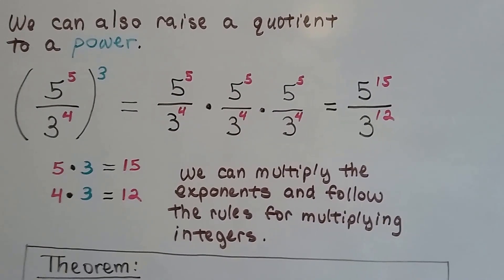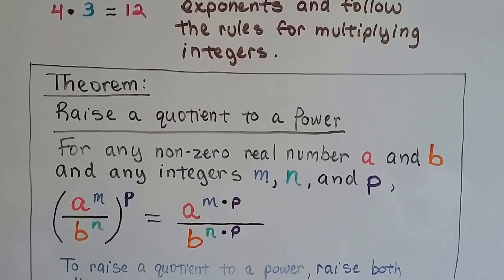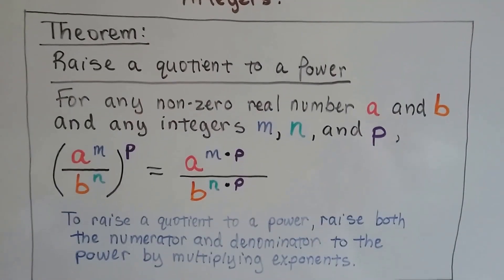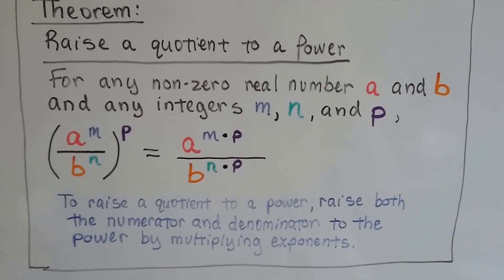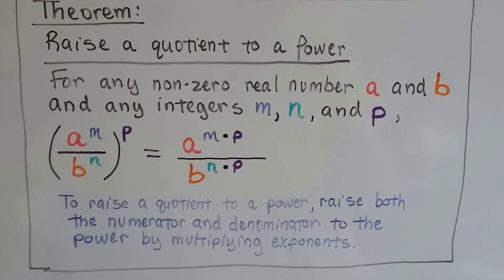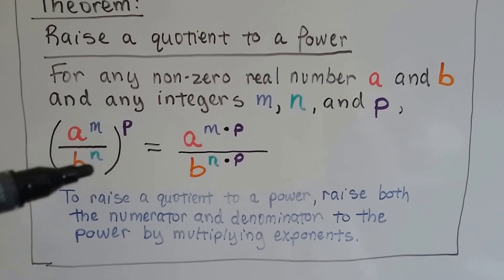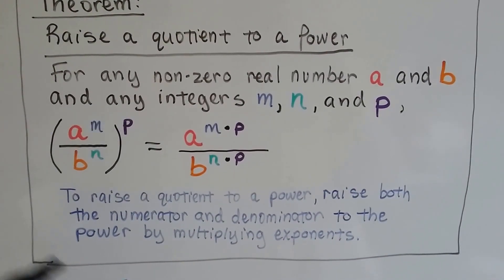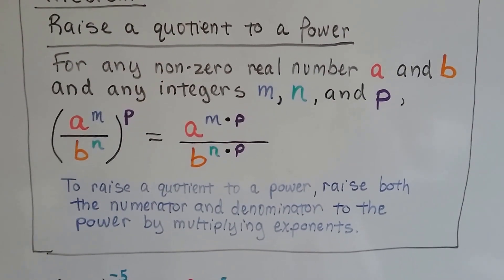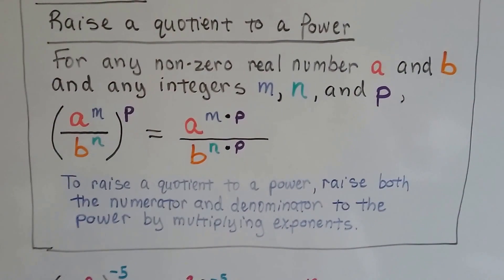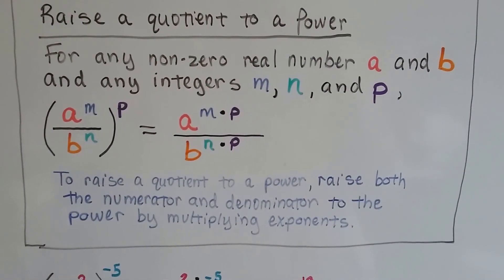If they're like signs, they're positive. And if they're unlike signs, they're negative. So here's our last theorem. To raise a quotient to a power for any non-zero real number a and b, and any integers m, n, and p, we just multiply them together. We would get m times p and n times p. To raise a quotient to a power, we raise both the numerator and denominator to the power by multiplying exponents.